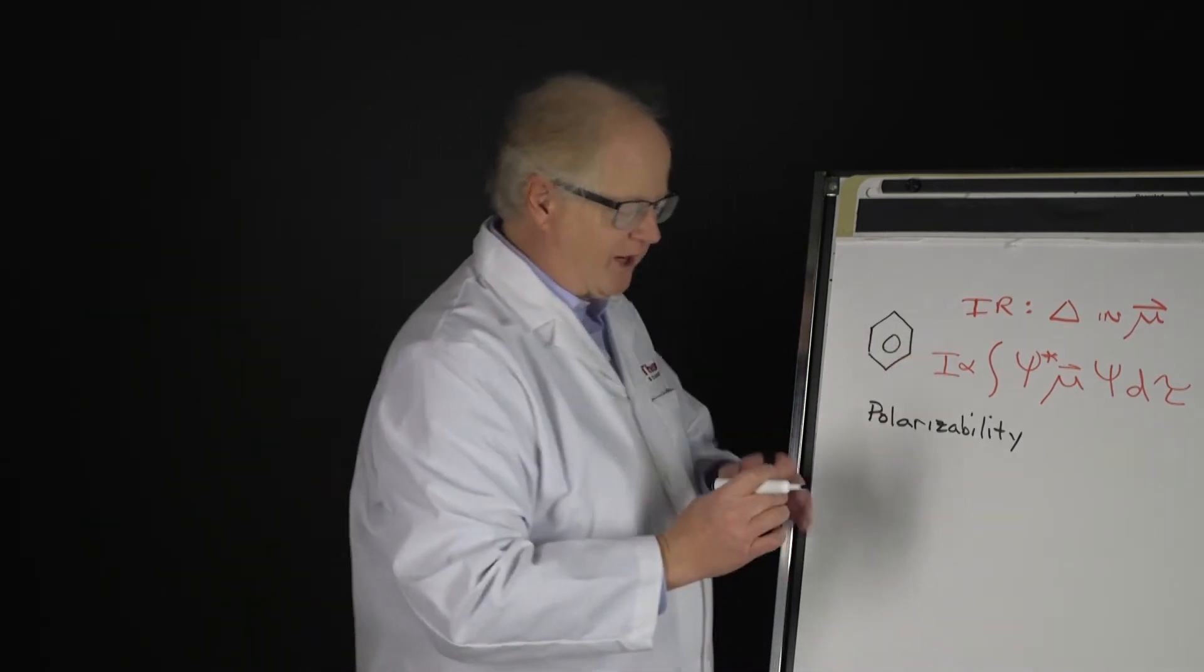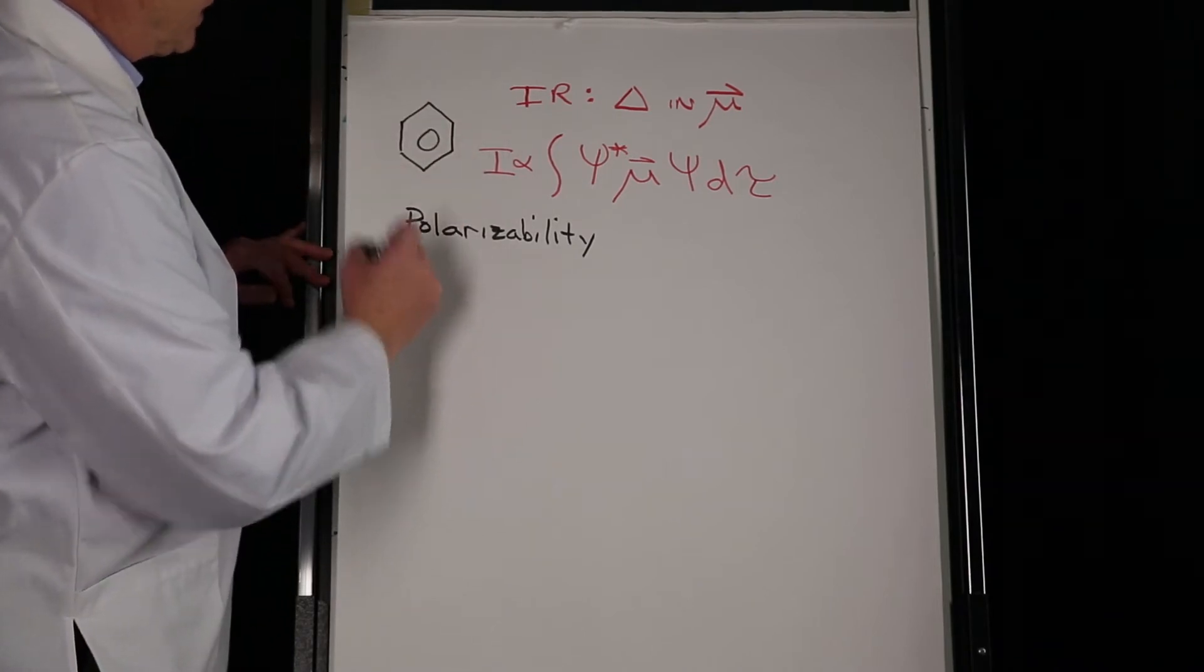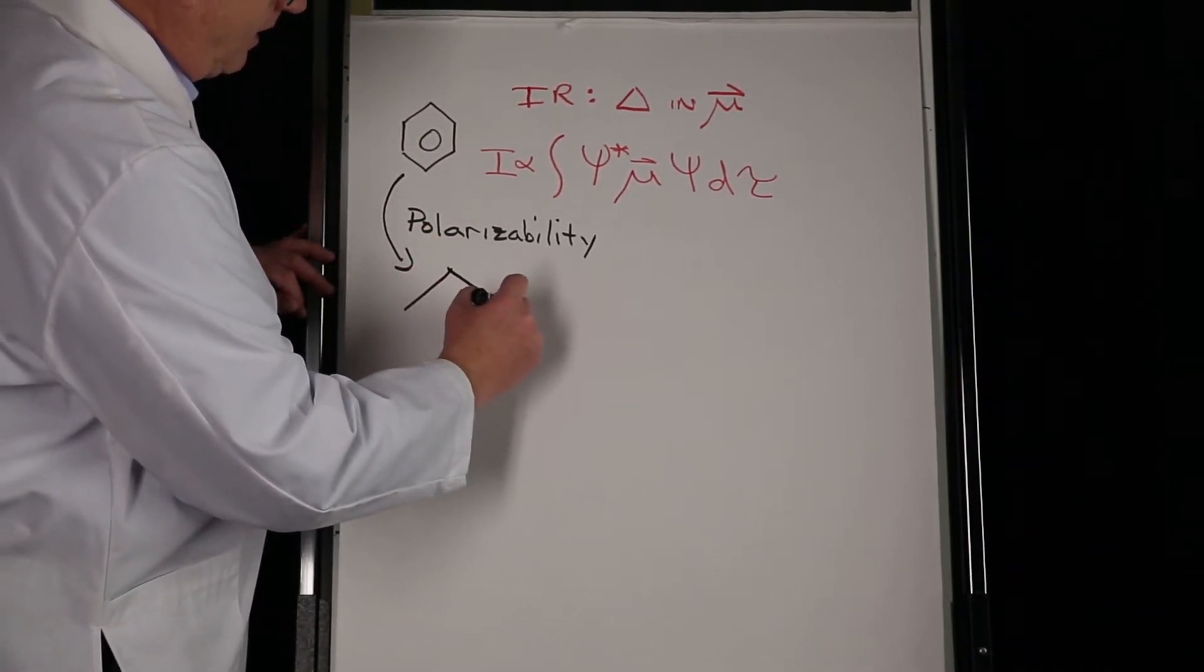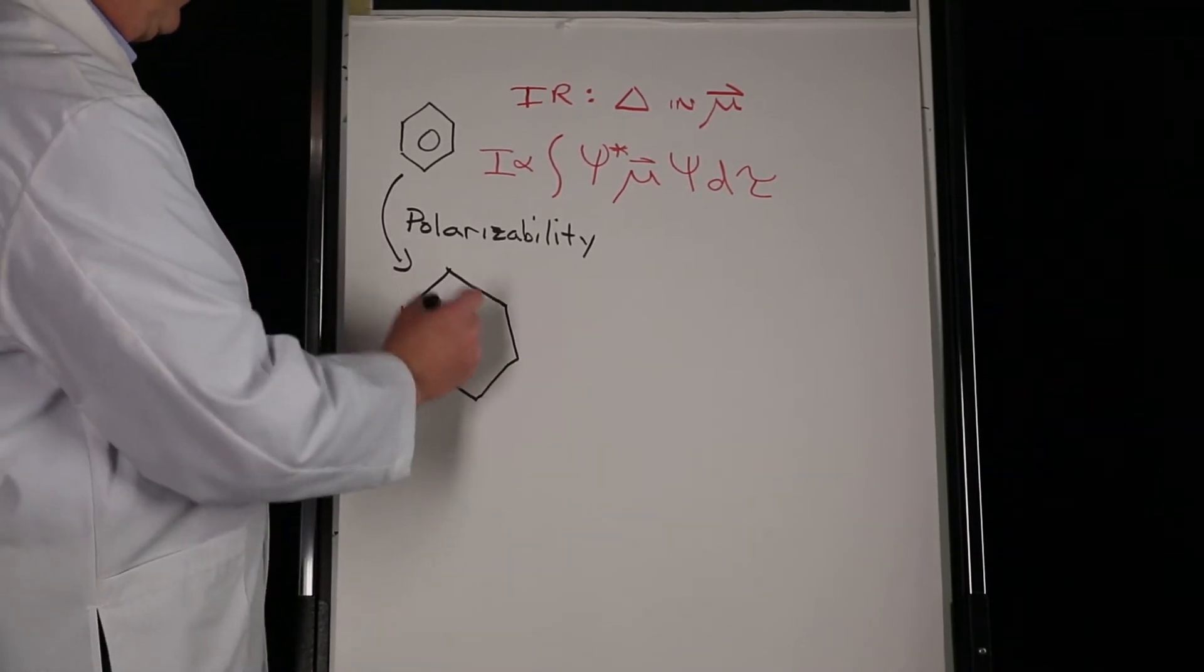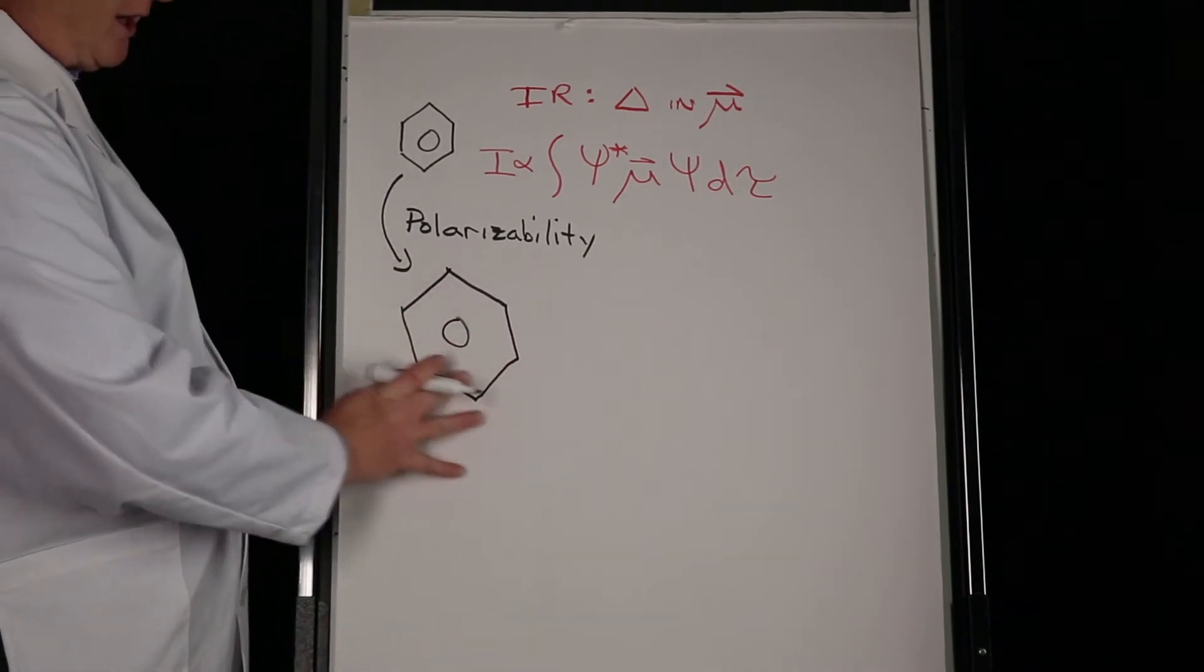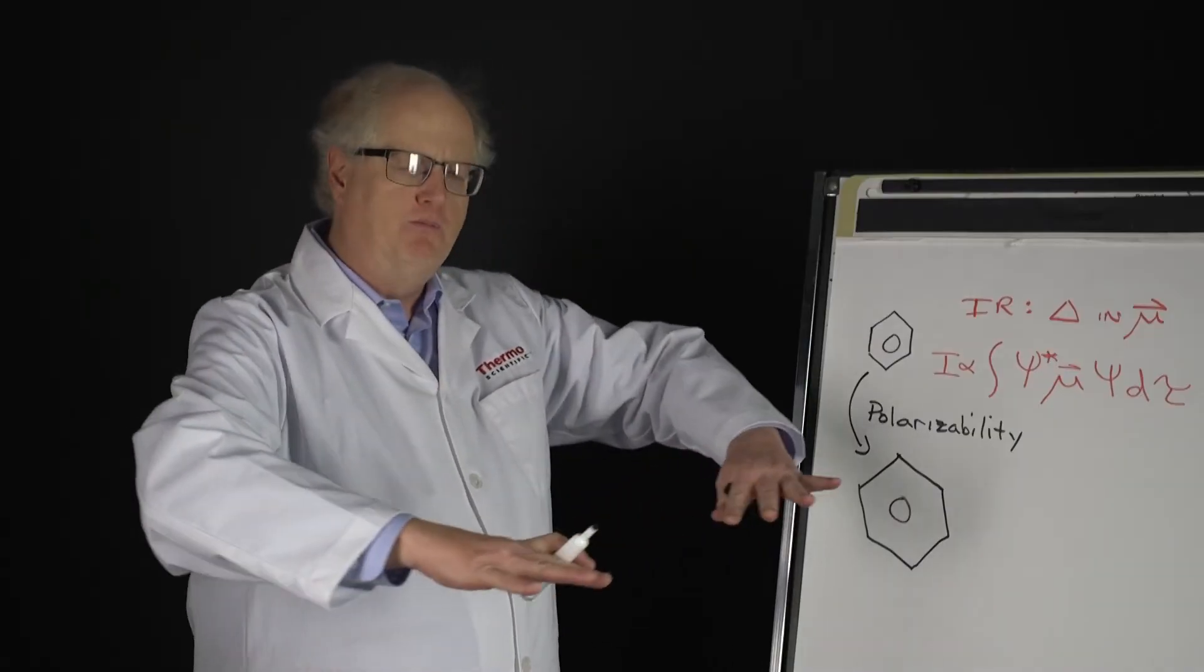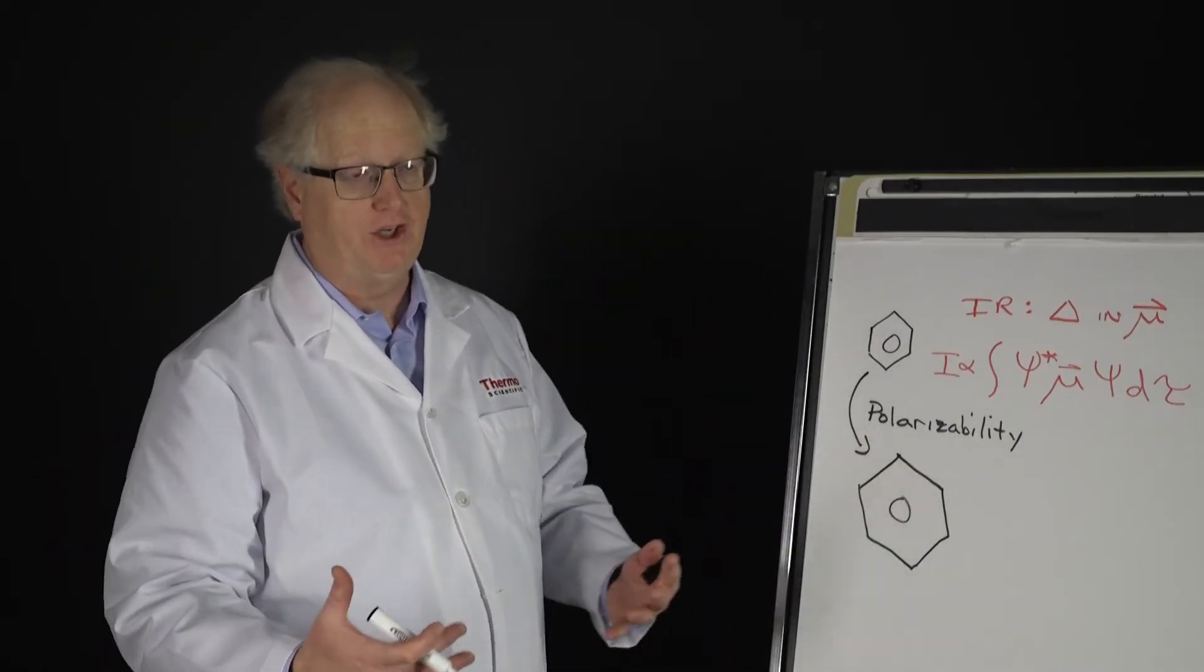Imagine the benzene ring when it stretches - the molecule becomes a bigger benzene molecule. The electron cloud associated with the benzene molecule has moved out. That is a polarizability change, a change in the polarizability ellipsoid.